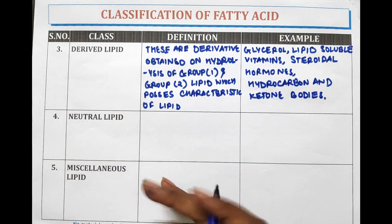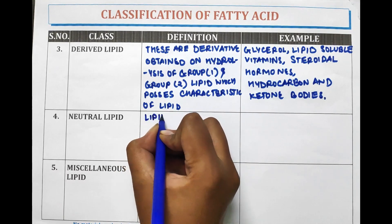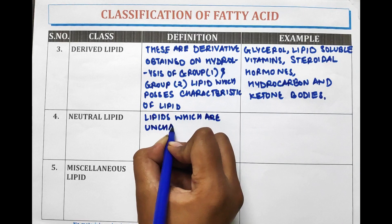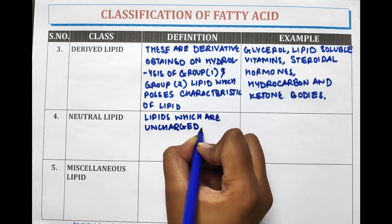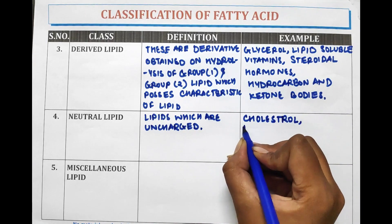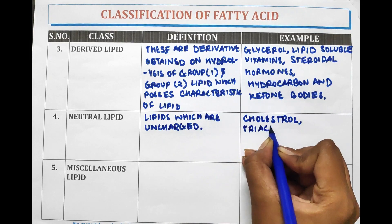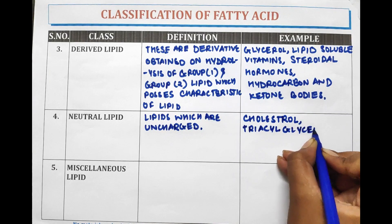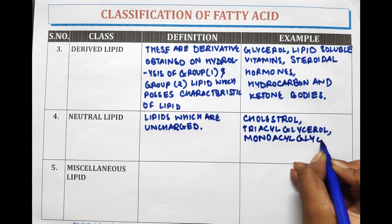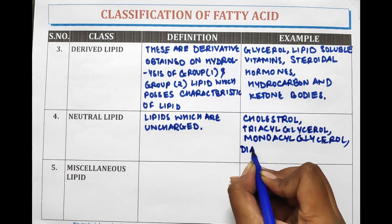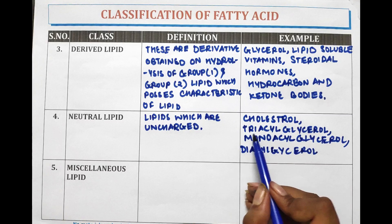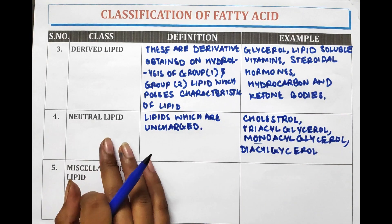Now we will discuss the Neutral Lipids. These are the Lipids which are uncharged. Examples are Cholesterol, Triacylglycerol, Monoacylglycerol, and Diacylglycerol. Cholesterol, Triacylglycerol, Monoacylglycerol, and Diacylglycerols are the examples of Neutral Lipids. Neutral Lipids are uncharged lipids.